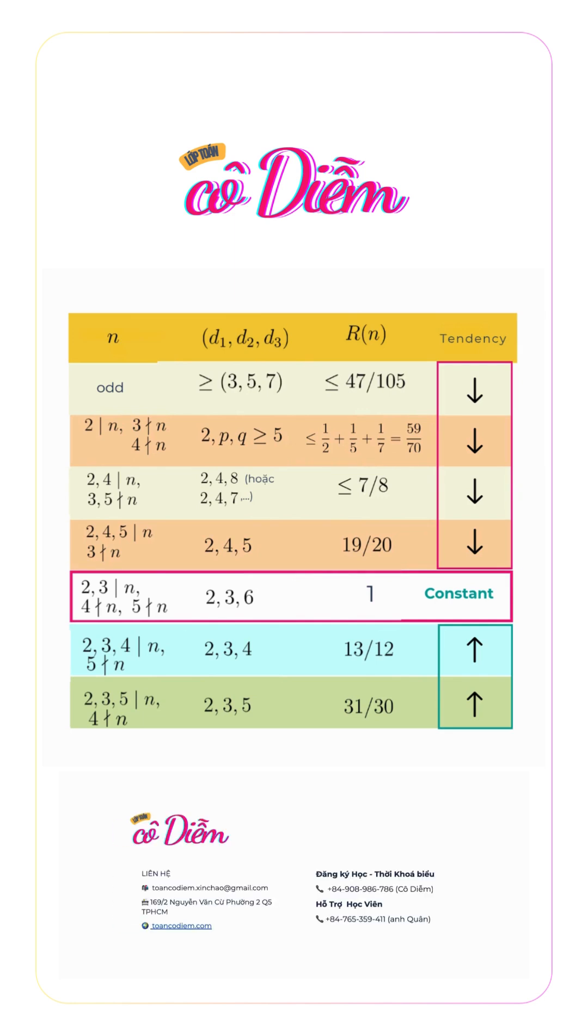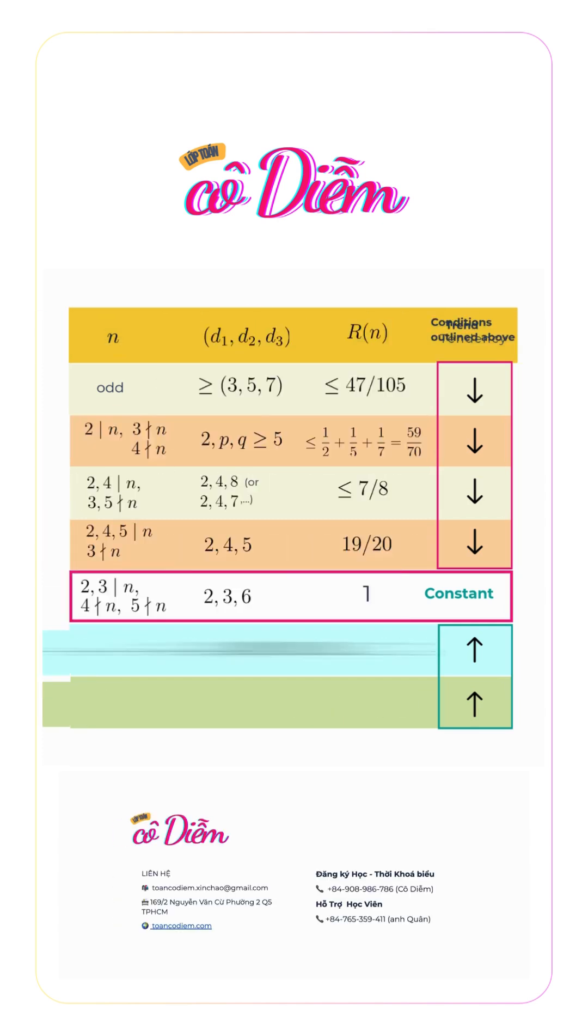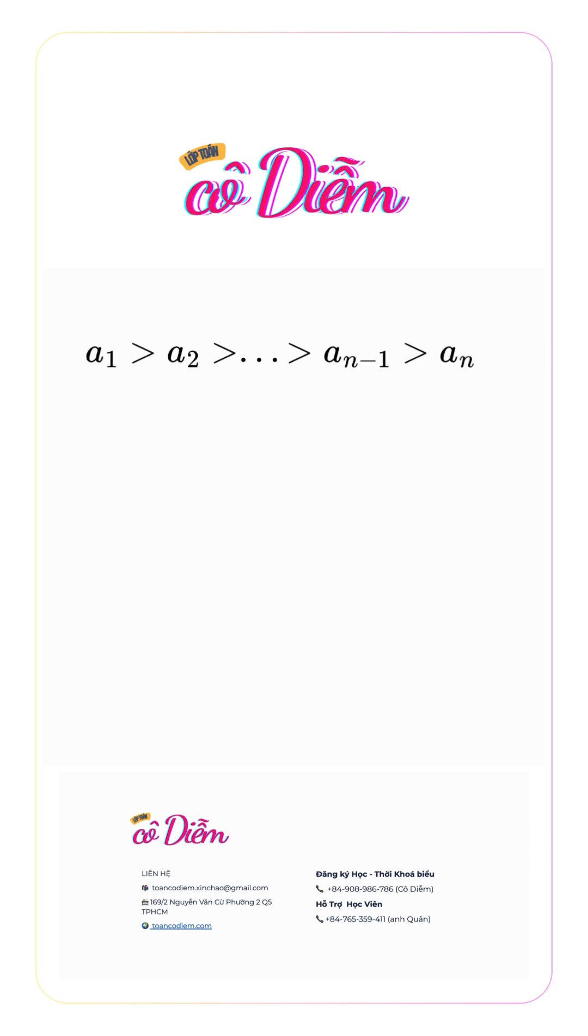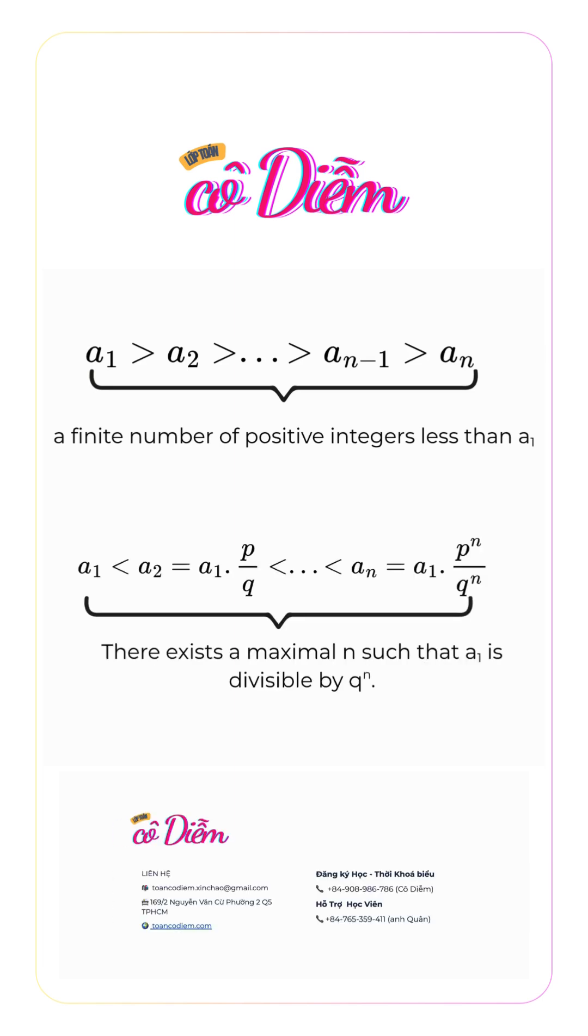Consider a strictly decreasing natural number sequence in which any number has at least three proper divisors. Such a sequence is finite, since for any natural number a_1, there are only finitely many numbers less than a_1 with at least three proper divisors.